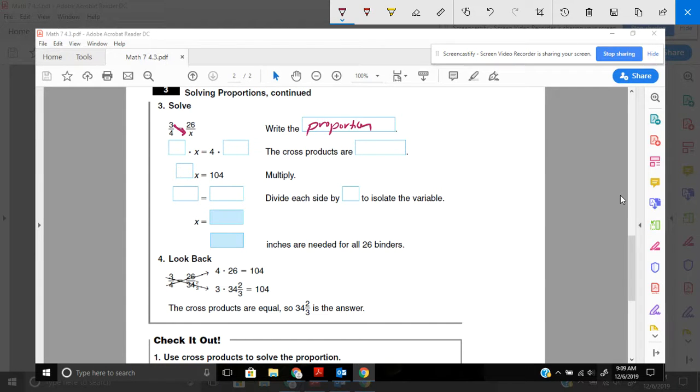3 fourths equals 26 over x. So I'm going to take 3 times x. I'm going to take 4 times 26, because cross-products are equal. 3 times x is 3x equals 4 times 26 is 104. And then the last step, I have 3x equals 104. I just need to divide by 3 on both sides to isolate my variable.